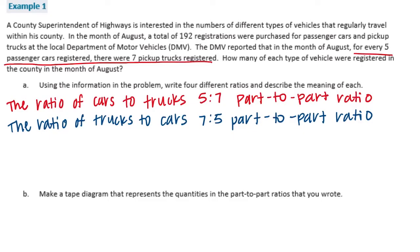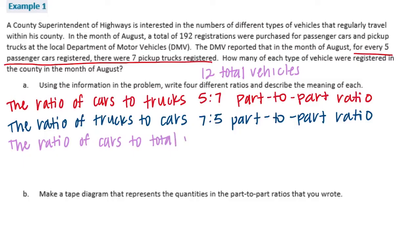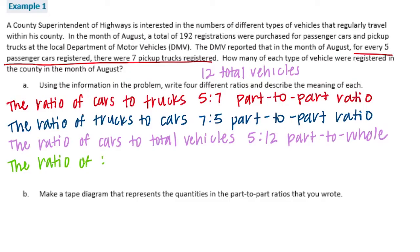Now let's go to part-to-whole ratios. There are a total of five plus seven, so the total would be 12 total vehicles — 12 is the whole. We can say the ratio of cars to total vehicles is five to 12, since there are five cars for every 12 total vehicles. That is a part-to-whole ratio. And one more: the ratio of trucks to total vehicles is seven to 12. That is also a part-to-whole ratio.